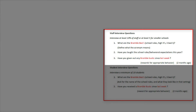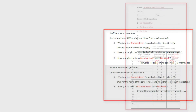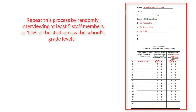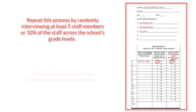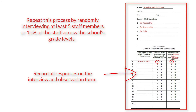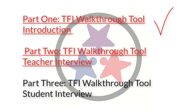Now you've asked one teacher the three interview questions. You will repeat this process by randomly interviewing at least five staff members or 10% of the staff across the school's grade levels. Record all responses on the interview and observation form. This has been part two of three videos on how to conduct the TFI walkthrough tool. We just showed a demonstration of how to conduct the teacher interview of the walkthrough. Continue to the third video to see a demonstration of how to conduct the student interview portion of the walkthrough.